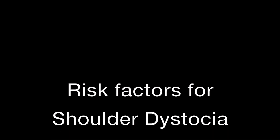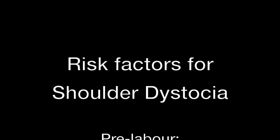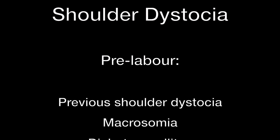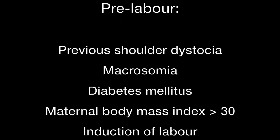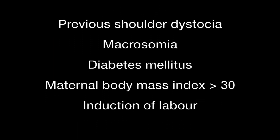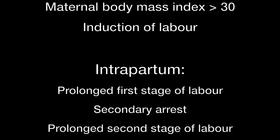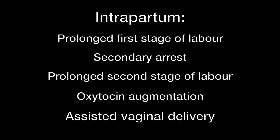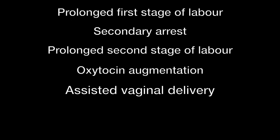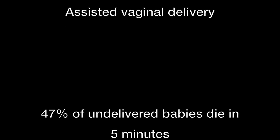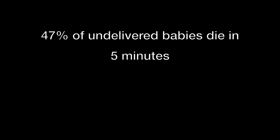Shoulder dystocia occurs when the head of the baby delivers but the shoulders do not. There are a number of risk factors that would make one anticipate shoulder dystocia — some of these occur before labor and some during. The reason why it is important to be able to deal with this emergency is because almost half of these babies will die within five minutes if they are not delivered.